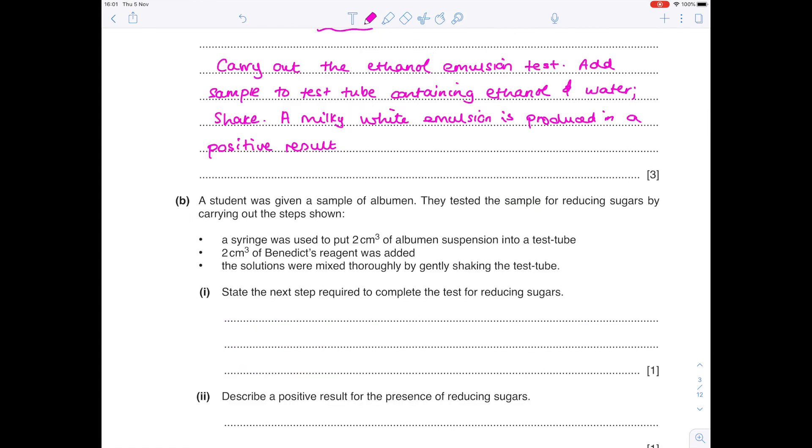A student was given a sample of albumin. They tested the sample for reducing sugars by carrying out the steps shown. A syringe was used to put 2cm³ of albumin suspension into a test tube. 2cm³ of Benedict's reagent was added. The solutions were mixed thoroughly by gently shaking the test tube.